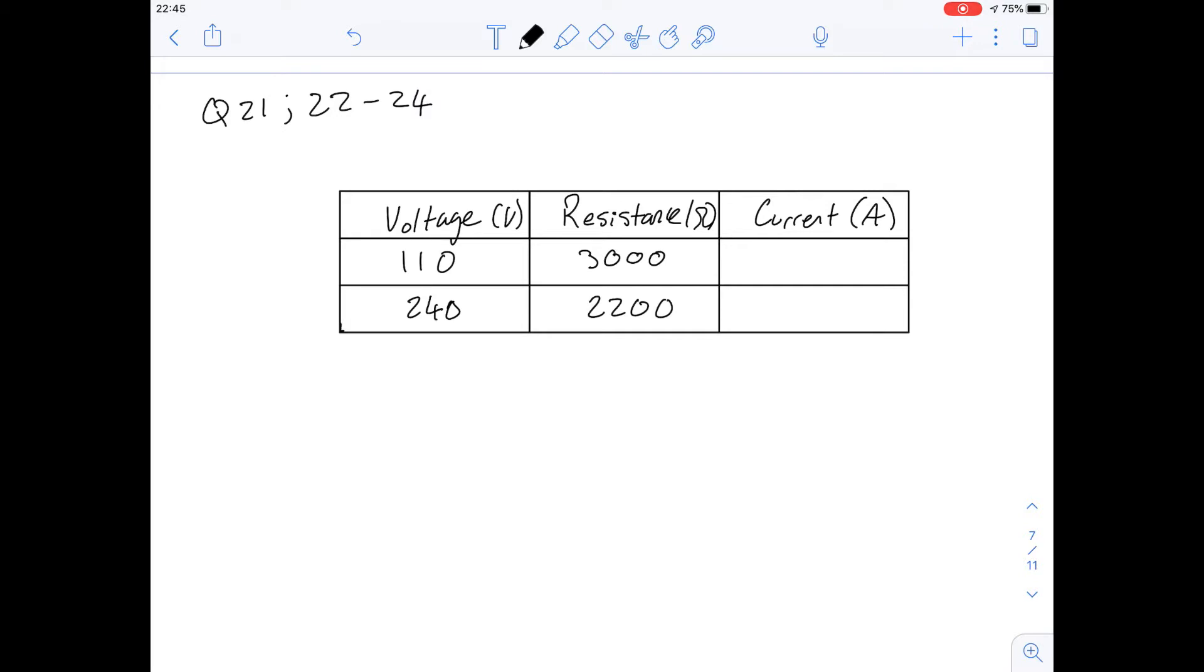So with voltage and resistance there's an equation we can use to work out current. I've added that particular column into the table here and that equation is V equals IR which you've probably come across before, but if we rearrange it we would get I equals V over R.